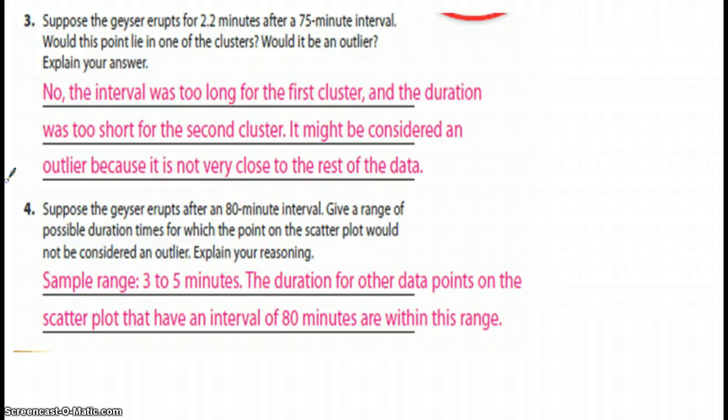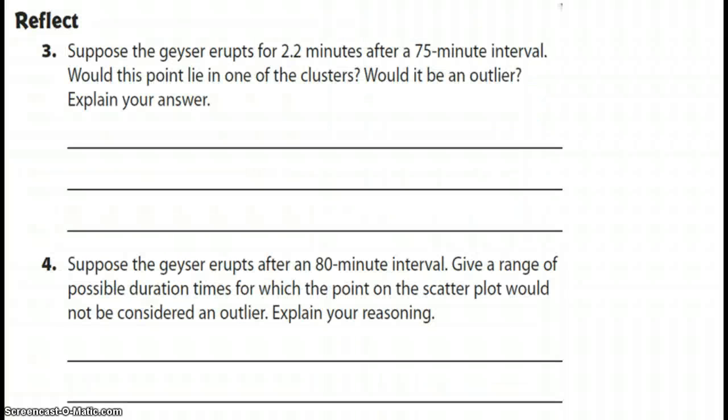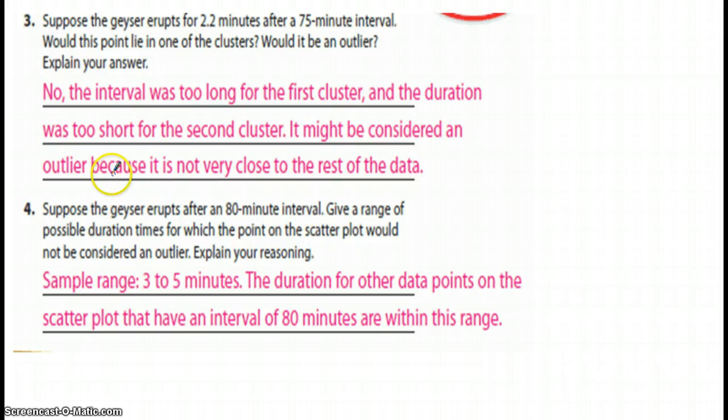Now, 3. Suppose the geyser erupts for 2.2 minutes after a 75 minute interval. Would this point lie on one of the clusters? Well, they say no, so let's go back to the graph and take a look. So, we're looking at 2.2 and 75. 2.2, which will probably be right here, and then we're going over to 75, which is 60, 70, which is somewhere there. Again, cluster, cluster, it would be considered an outlier. Would the point lie on one of the clusters? We said no. Would it be an outlier? Well, yeah, it might be, because if we define, but it's a possibility. It's not far, but it's not too far either.